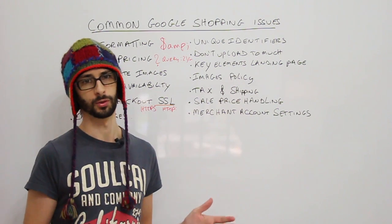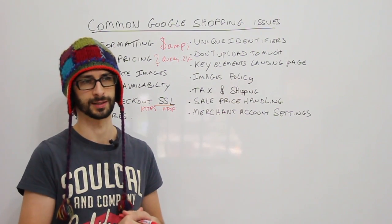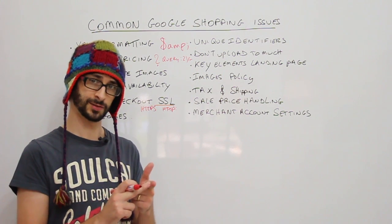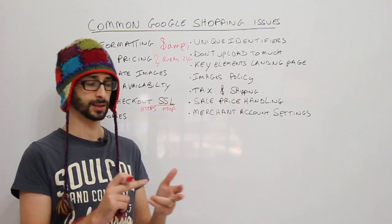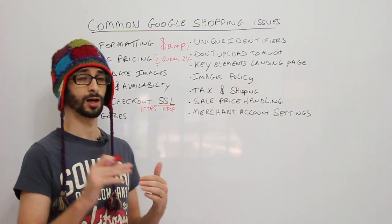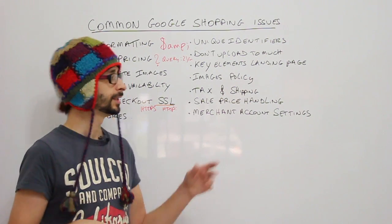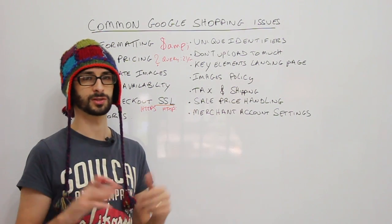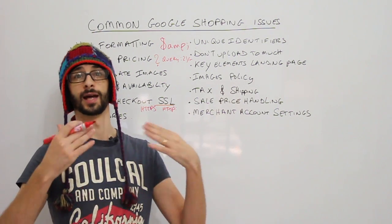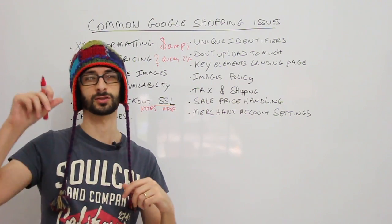Key elements on the landing page are a basic requirement for every e-commerce website. You need to make sure your price is highly visible, availability is visible, the buy button is present, and you have a privacy policy on your website. The privacy policy can be in the footer, but all other key elements of your landing page need to be above the fold — visible without scrolling.